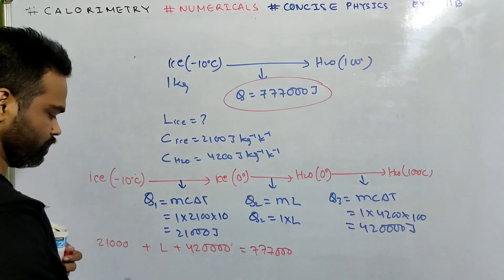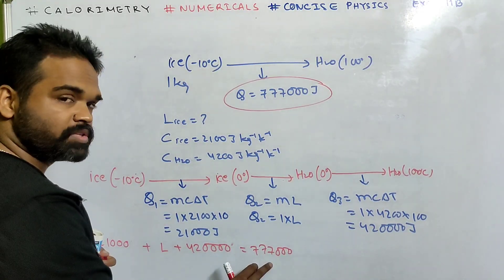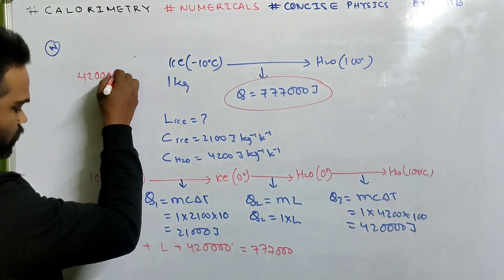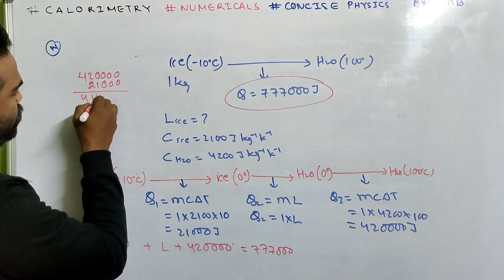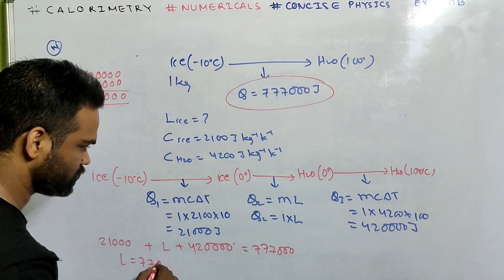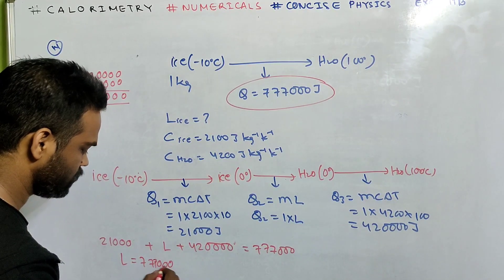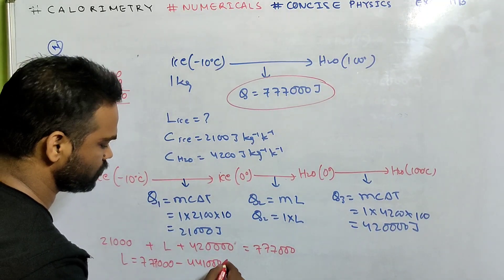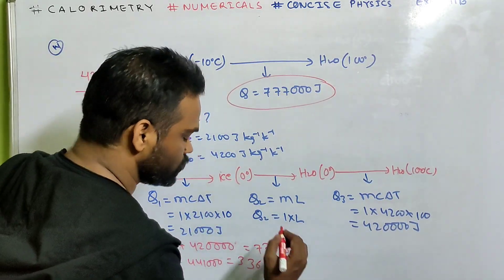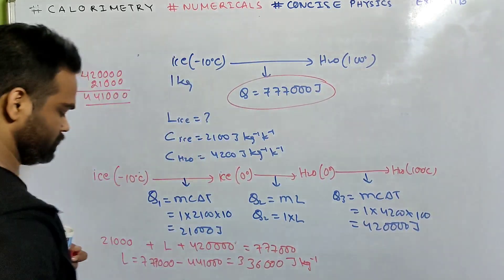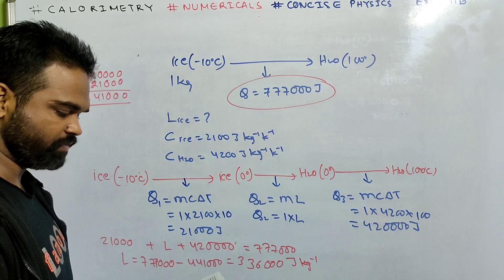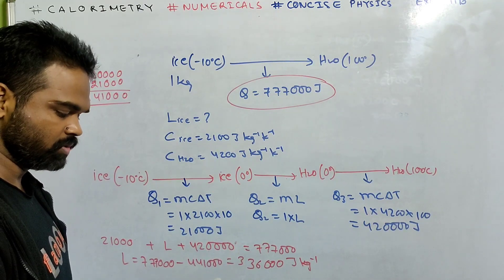Solving: L = 777,000 − 21,000 − 420,000 = 336,000 joule per kg. The specific latent heat of ice is 336,000 joule per kg. That's the answer. In the previous sum we found total heat; here the unknown was L of ice. The process remains the same.